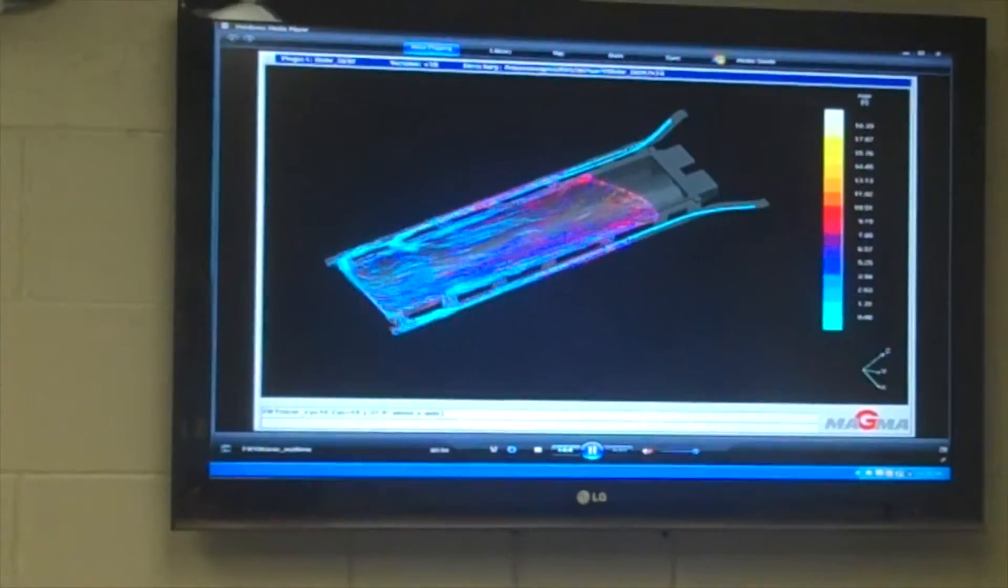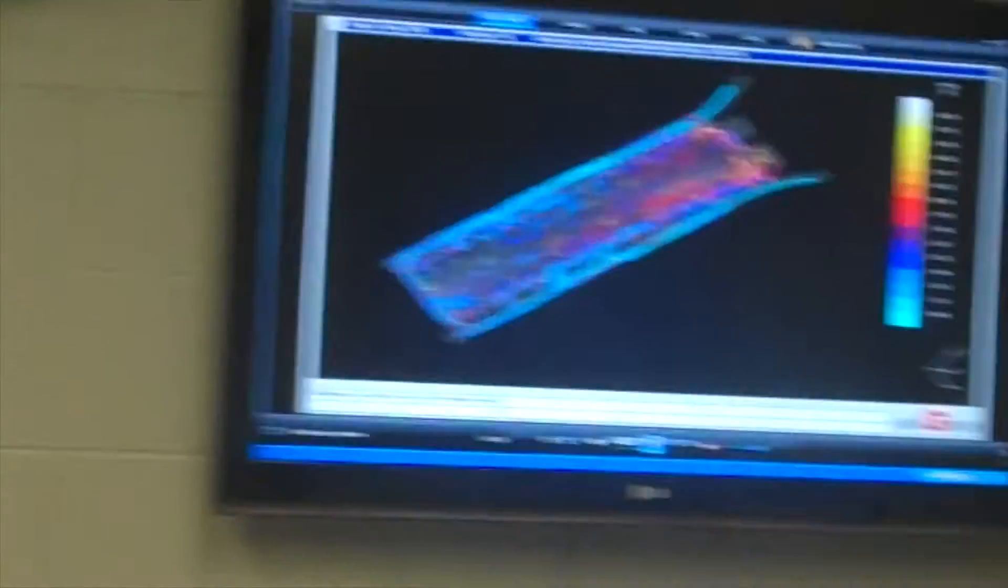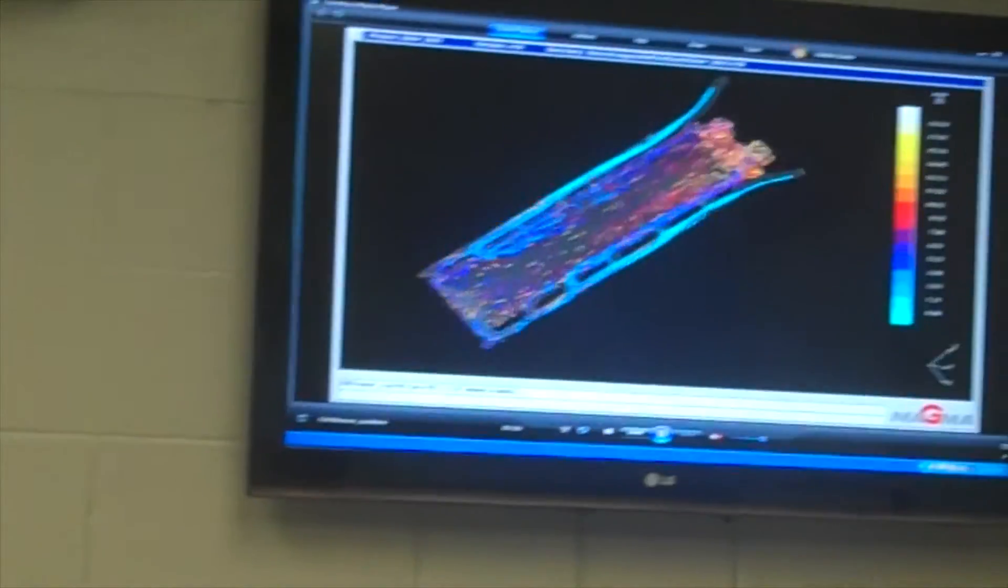You can actually see when you look at this here, the side scale is just the age of the material. The light blue color is obviously fresh material.